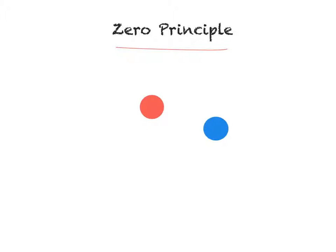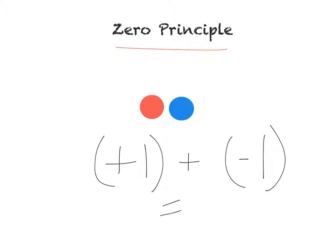That means whenever I pair a red counter and a blue counter they're always going to come out to be zero. It's like saying positive one plus negative one. If you do that actual math it's always going to equal zero. That's going to be important as we look at how to use them to add.